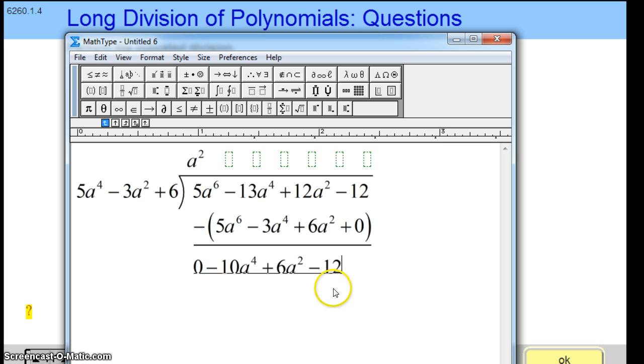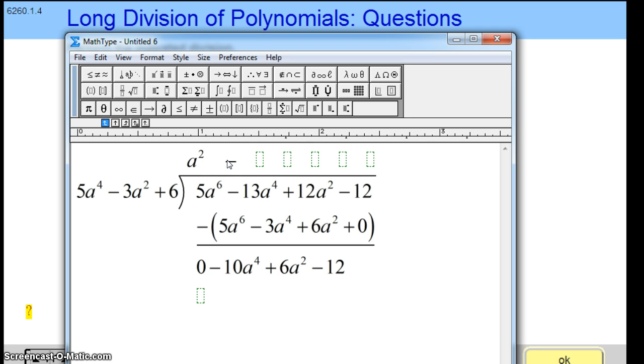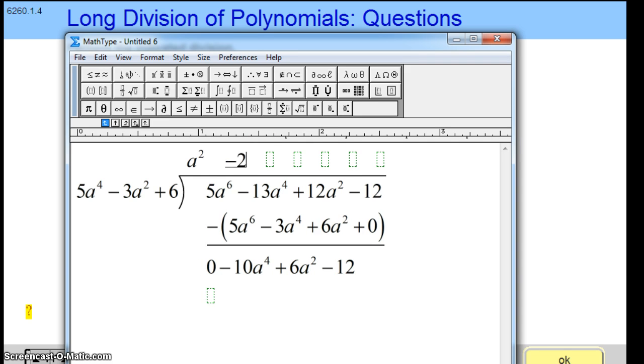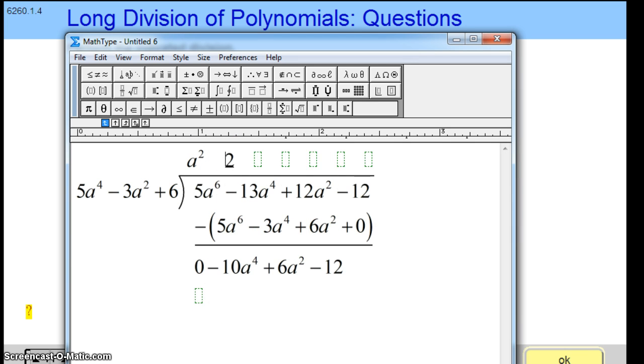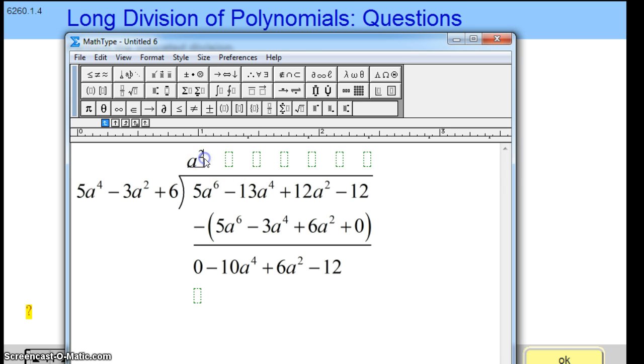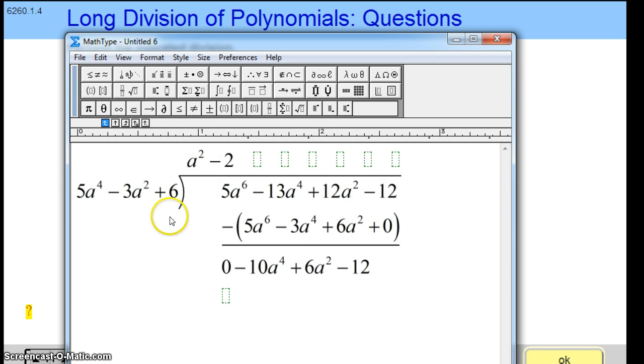Now we start over and we say, how many times does 5a to the fourth go into 10a to the fourth? Well, if you multiply this by 2, you should get exactly that. Actually, it's negative 2, right? We have a negative 10a to the fourth. So a squared minus 2 on top.